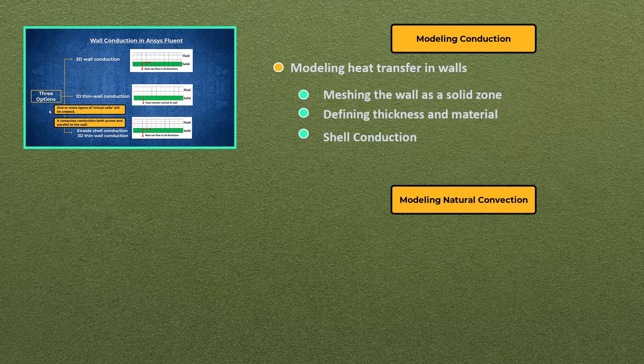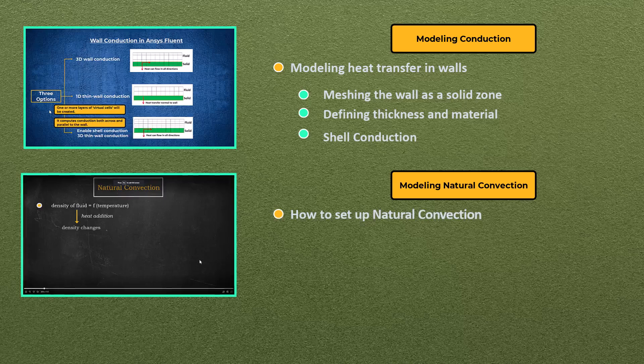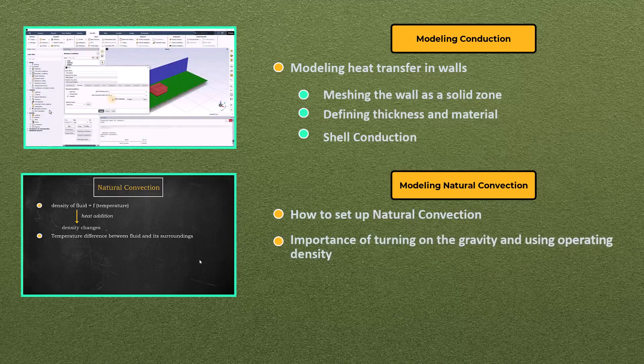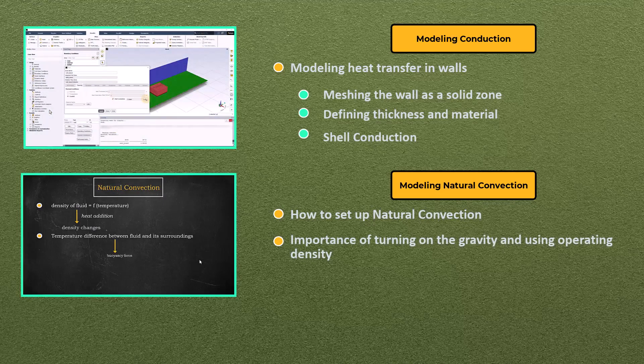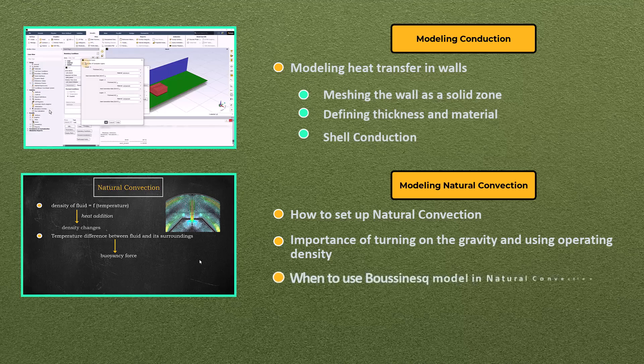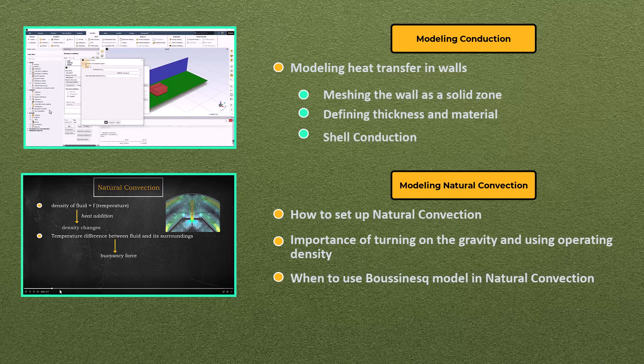In lesson 4, we will learn how to set up natural convection, the importance of turning on gravity and using operating density, and when to use the Boussinesq model in natural convection problems.